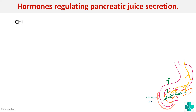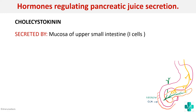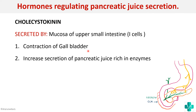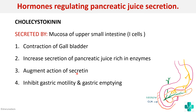Next, cholecystokinin is secreted by the mucosa of the upper small intestine from the I cells. Its main function is contraction of the gallbladder — from the term itself, 'chole' refers to gallbladder, and cholecystokinin means something which increases gallbladder contraction. It also increases secretion of pancreatic juice rich in enzymes because it acts on the acini. CCK augments the action of secretin, so secretin and CCK work together to produce an optimum pancreatic secretion. CCK also inhibits gastric motility and enhances the motility of the small intestine and colon.